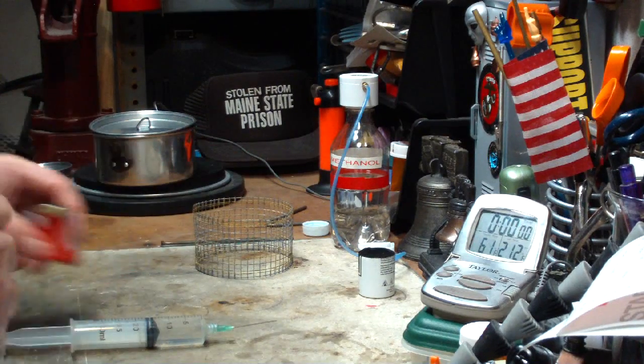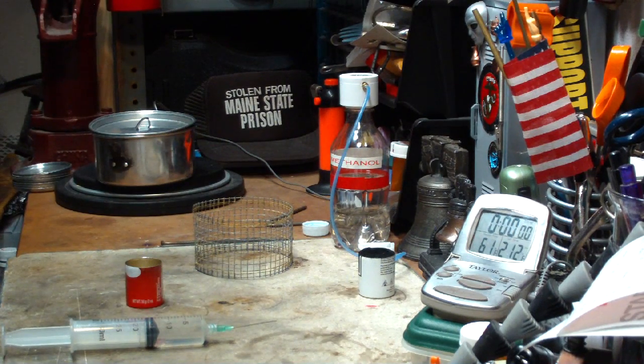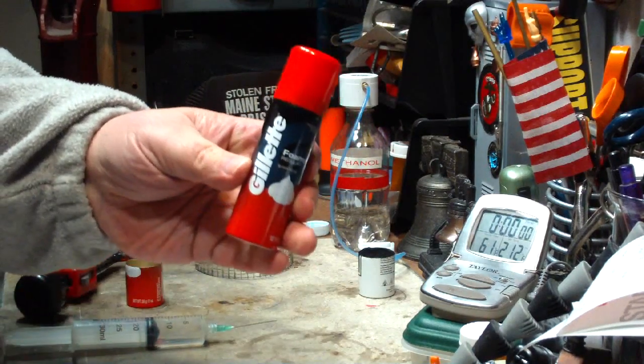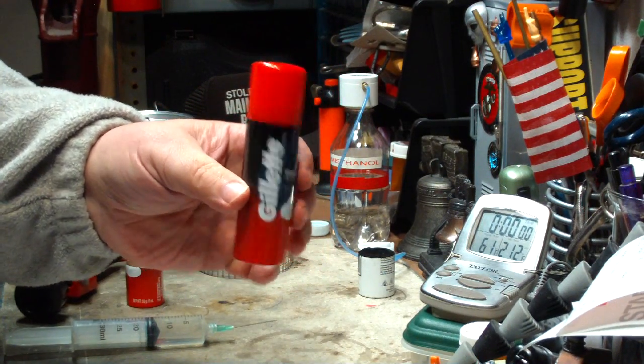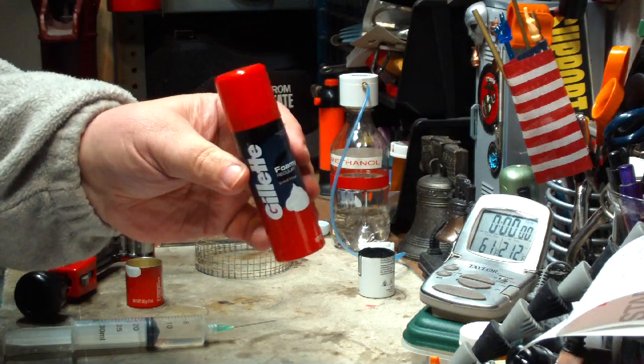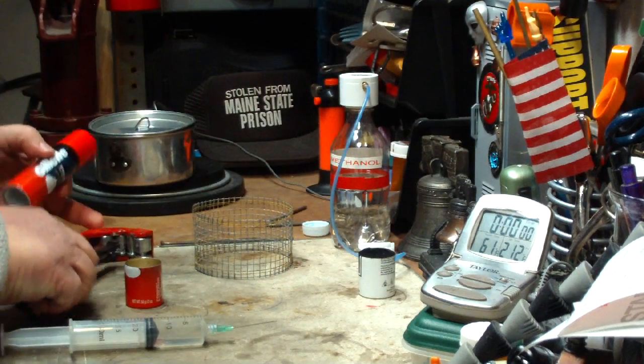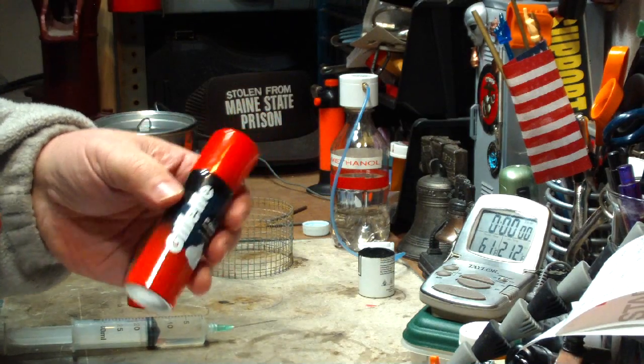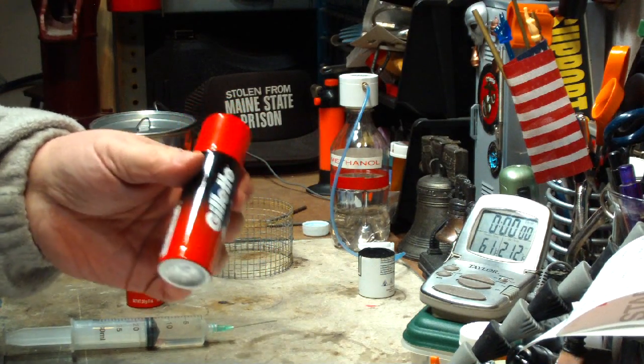So what I did was I cut another can which is just this Gillette foamy shaving soap. You can get these at Target and other places for like a buck. I emptied it out of all of the soap so it didn't come out anymore so it means the pressure in here should be kind of light.